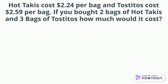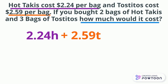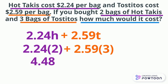One last example: Hot Cheetos cost $2.24 per bag and Tostitos cost $2.59 per bag. If you bought two bags of Hot Cheetos and three bags of Tostitos, how much would it cost? We write 2.24H for Hot Cheetos and 2.59T for Tostitos, then add them for the total. Substituting, we get 2.24 times 2 plus 2.59 times 3, which equals 4.48 plus 7.77.